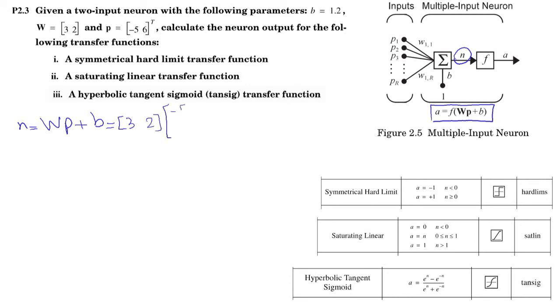P is minus 5, 6. Consider that now I'm transposing that. So it's going to be two rows and one column. So it's minus 15 plus 12 is minus 3.